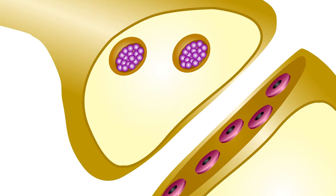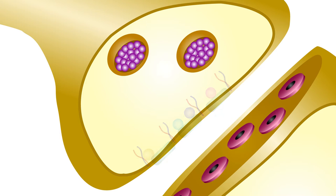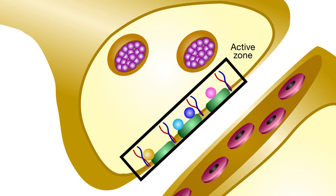The release of neurotransmitters from the pre-synapse is heavily regulated through a complex of proteins at the site of release, the active zone. However, the precise role of many of these proteins has remained unclear.